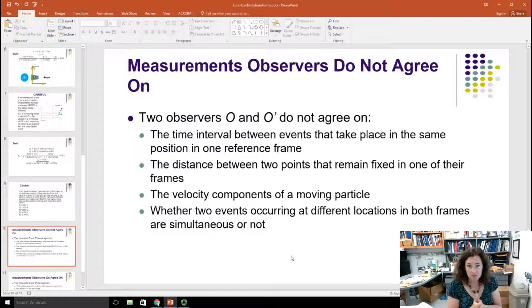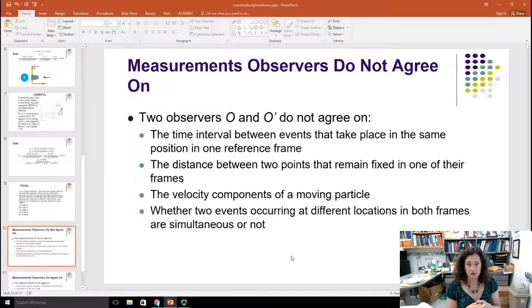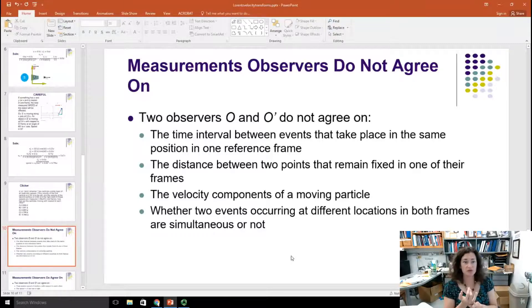Now to sum up, we've gone through motion, time dilation. So let's sum up what we've learned so far. Here's things that people don't agree on from two different inertial reference frames. Those observers O and O prime don't agree on the time interval between events that take place in the same position in one reference frame. So in other words, we have things like the twin paradox, time dilation. The distance between two points that remain fixed in one of their reference frames, that's the length contraction.